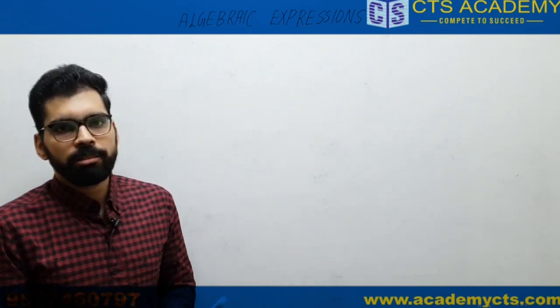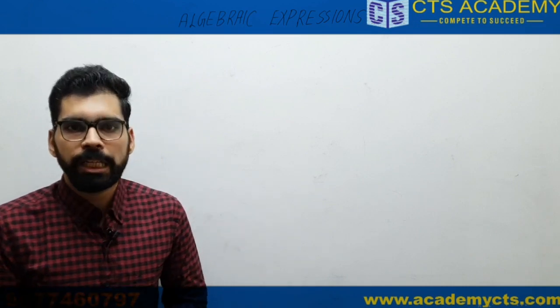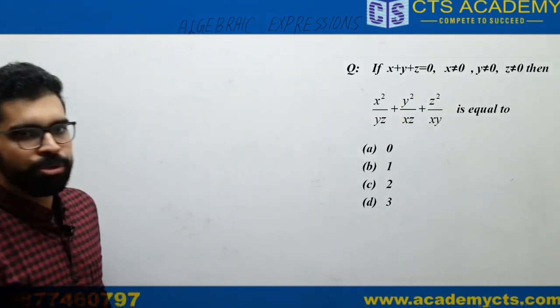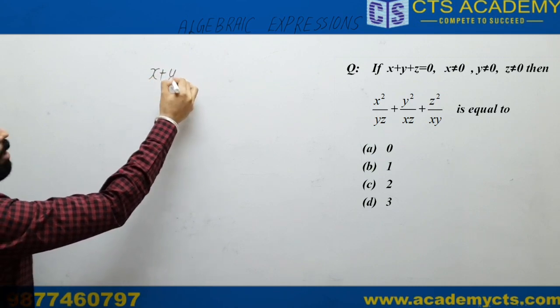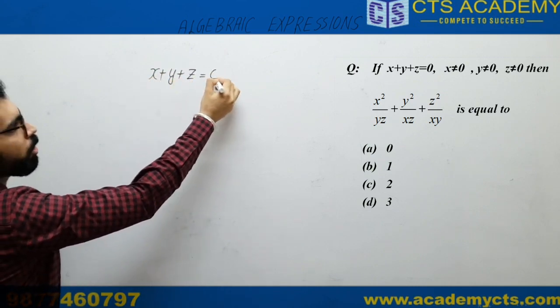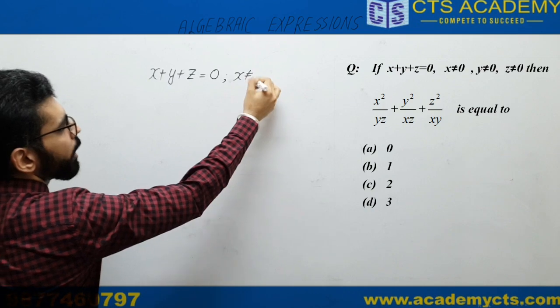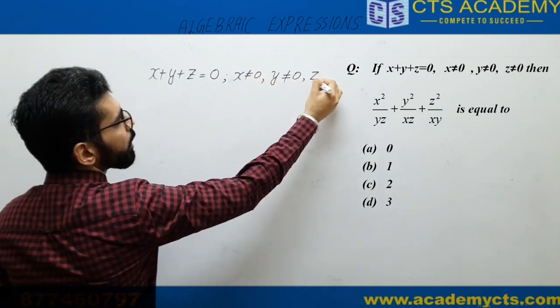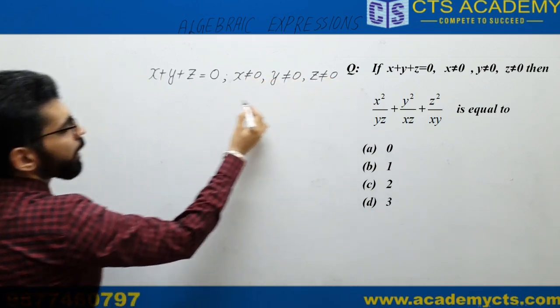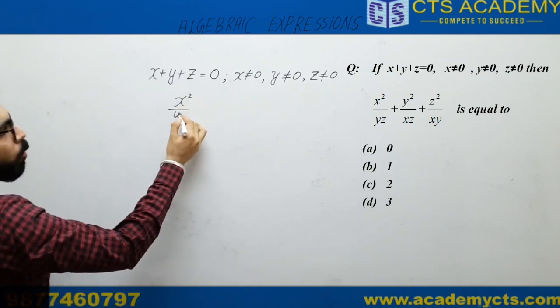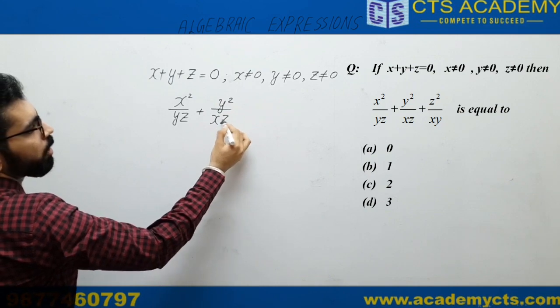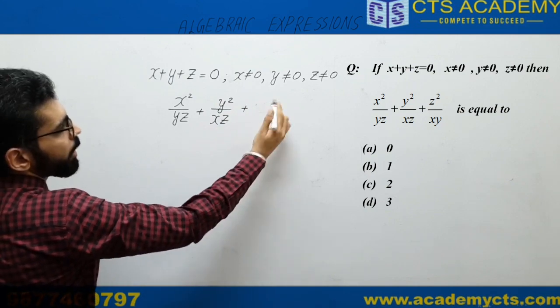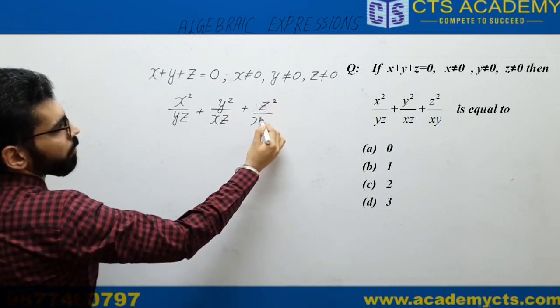I hope you will find this video useful. Let us now discuss two questions which were asked in previous NTSE exams. The first question: if you are given x + y + z = 0, provided x, y, z are non-zero, you have to find the value of x²/yz + y²/xz + z²/xy. What will that be?